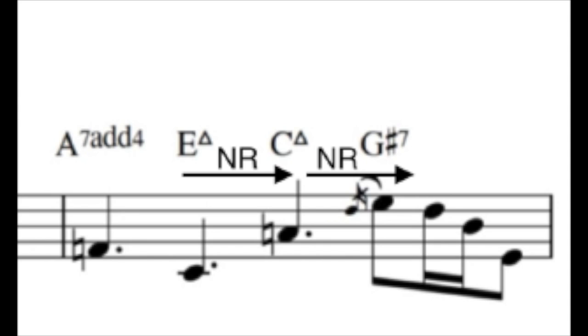The next movement from C major 7 to G sharp 7 is the same interval we moved from E major to C major, which was a major third. Because of that, we're able to apply another NR transformation to create the G sharp 7 chord.